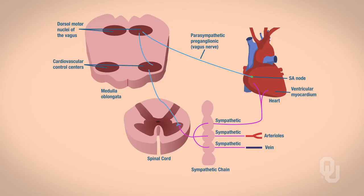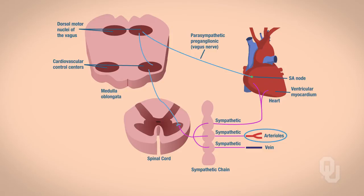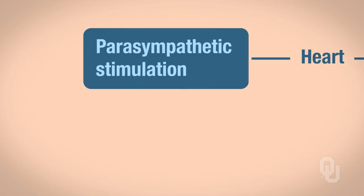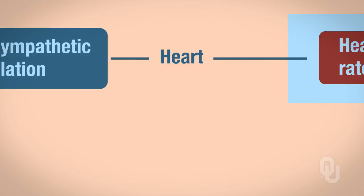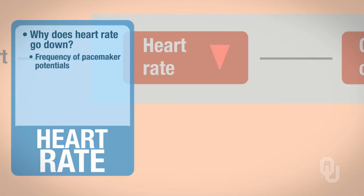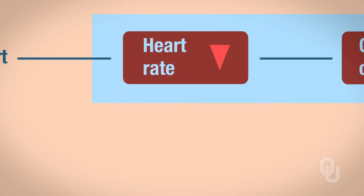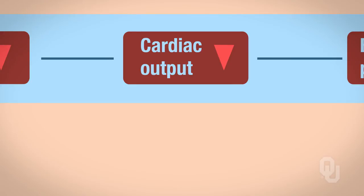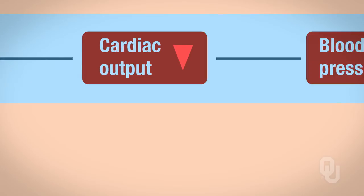This slide illustrates the parasympathetic innervation to the heart — the SA and AV node — and how the sympathetic nervous system also innervates the heart via the SA node, AV node, and ventricular myocardium. If a parasympathetic response is sent to the heart, heart rate goes down. Be sure to review the frequency of pacemaker potentials and which channels are augmented or delayed. If heart rate goes down, cardiac output goes down, meaning less blood leaves the heart per minute, so blood pressure decreases.